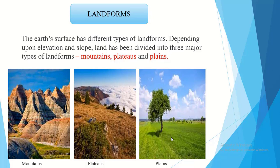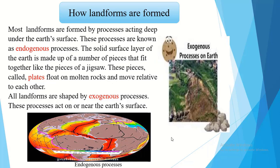How landforms are formed? Most landforms are formed by processes acting deep under the earth's surface. These processes are known as endogenous processes. Endogenous is an internal process and it is happening within the earth.